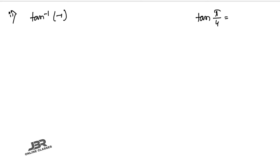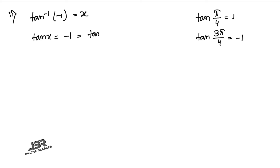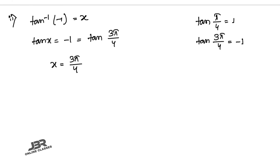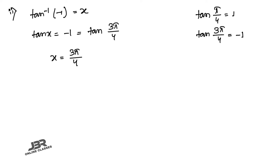Sum number 3.2: tan⁻¹(−1) = x, so tan x = −1. We know tan(π/4) = 1 and tan(3π/4) = −1. Therefore x = 3π/4, or equivalently x = −π/4.